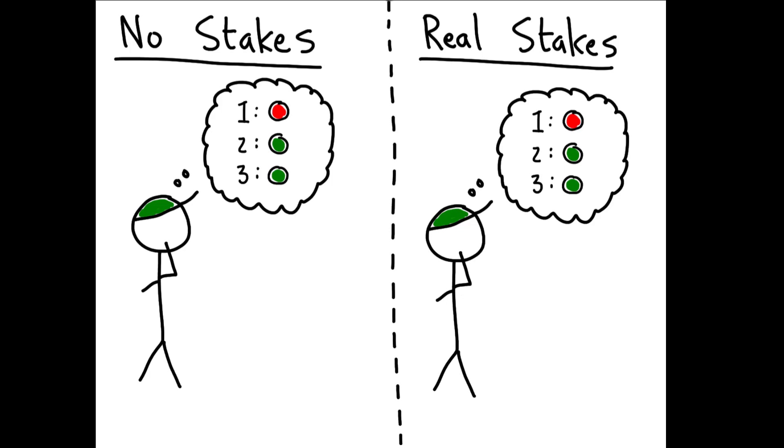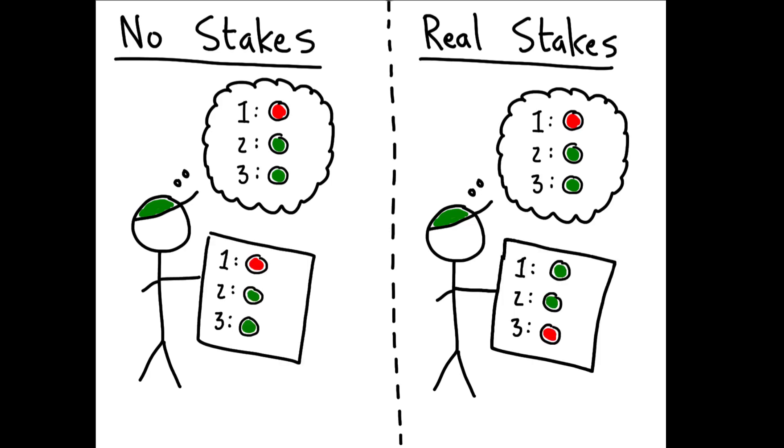When there is an incentive to behave strategically, survey respondents become more likely to rank themselves and their family members more highly, and this leads to a 34.6% decline in accuracy as measured by ex-post returns.